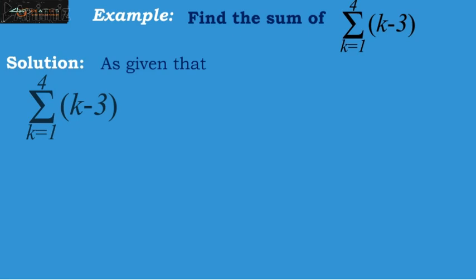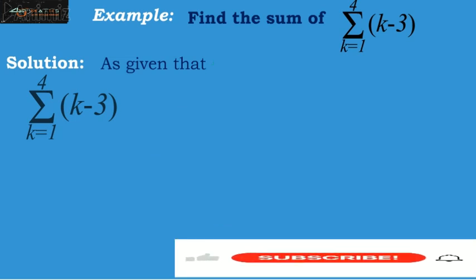As we have given summation k equals 1 up to 4, k minus 3. Here, k runs from 1 up to 4. So, the only labor we have to do is to replace the value of k in this formula. That is, first we will put 1, then 2, 3, and finally 4, and we will add up those values.